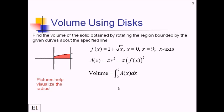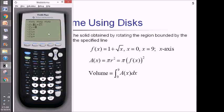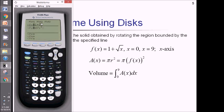Now I just do this on the calculator. To make my life a little bit easier, I'm going to put my a of x in as a separate function — pi times y1 squared. Now there's my area function. Quitting out of that, I'll do math 9 from 0 to 9, integrating that y2 function I just put in my calculator, dx. And that's going to come out to a value of 268.606.